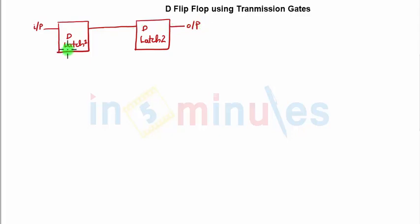Very important to notice that there will be enable signals present in both latches. Suppose this is my enable and this is my enable. If the first latch gets its enable signal connected to clock, then the second latch gets its enable signal connected to clock bar.